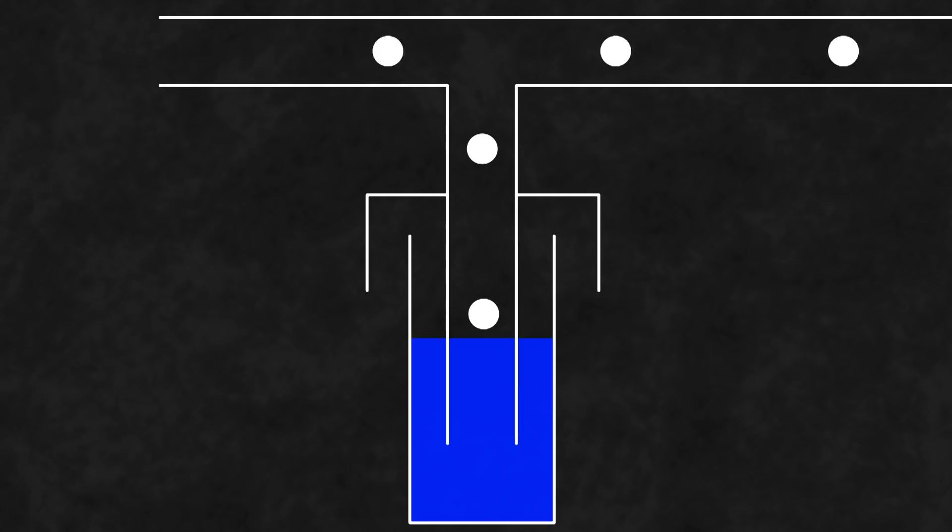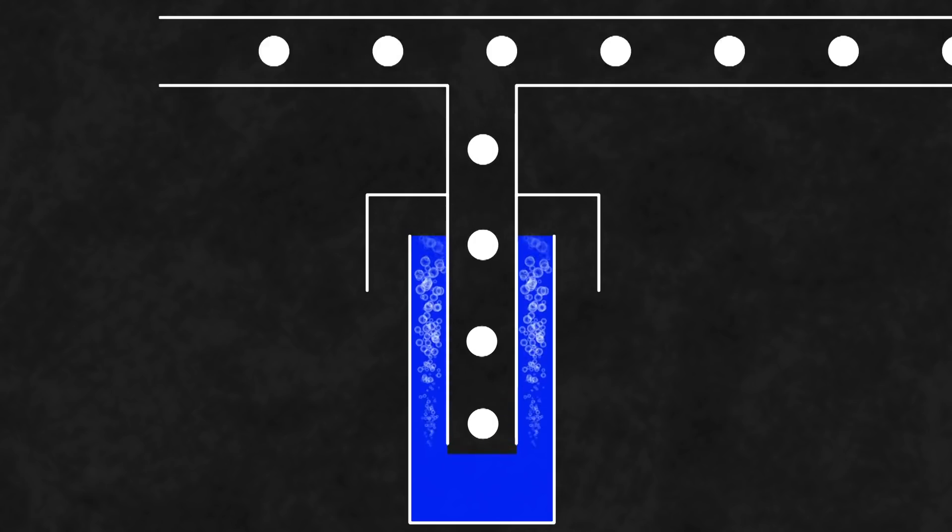Basically, as the pressure inside the inert gas line increases, the water gets pushed down. Once the pressure increases so much that the water's gone, excess gas is free to escape, relieving that pressure.